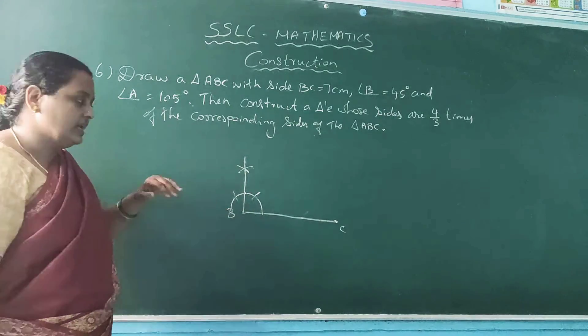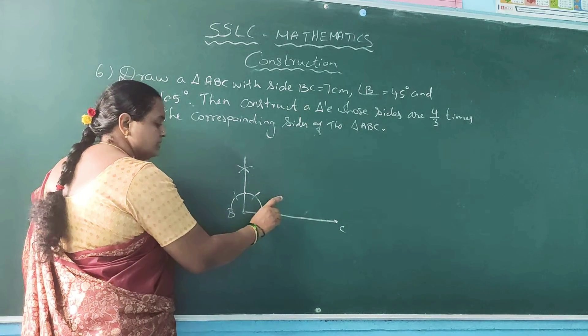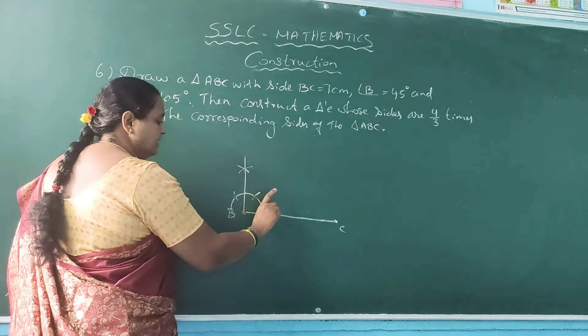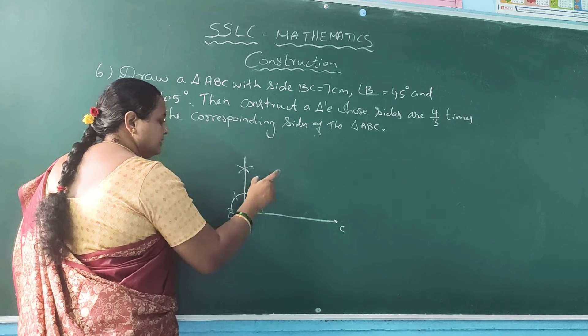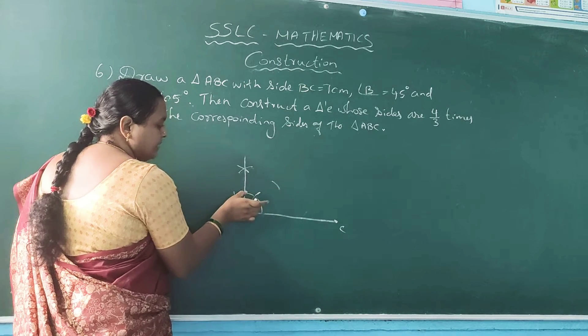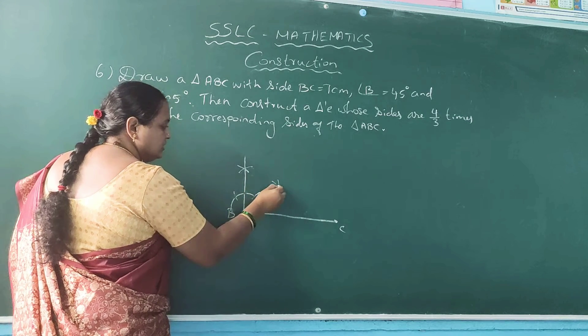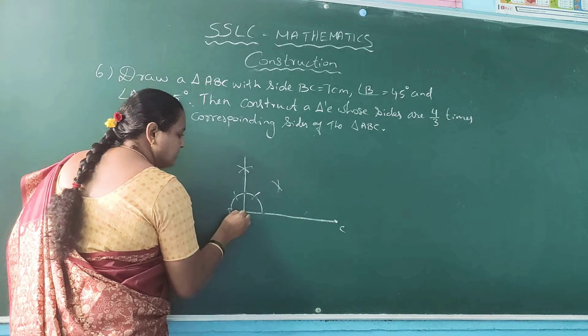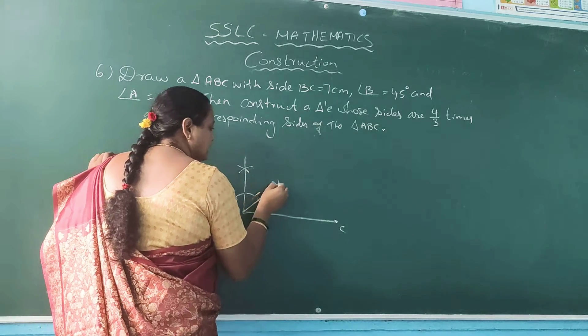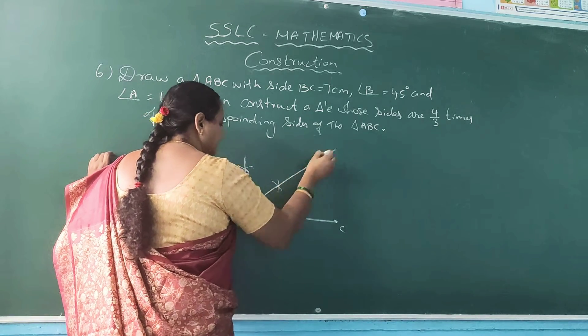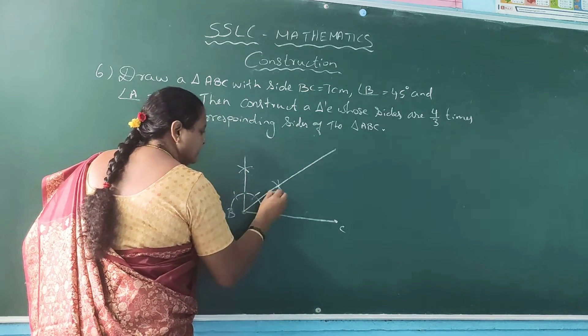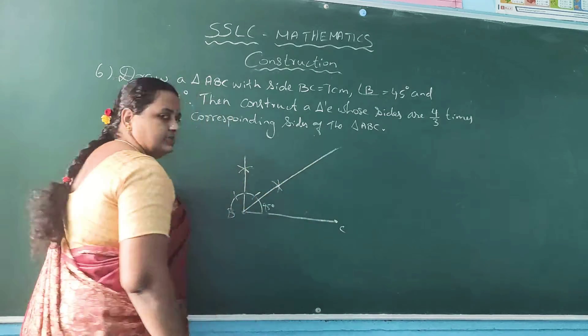Half of 90 degree is nothing but 45 degree. So bisect this 90 degree. How to bisect? Keep your compass needle here with suitable measurement, mark it up. Same measurement, keep here in 90 degree, cut the arc. So this line passing through this, so this is nothing but 45 degree. Draw a straight line.